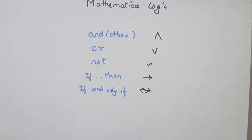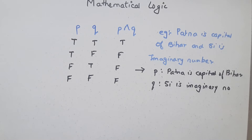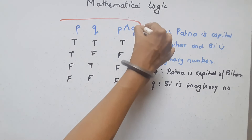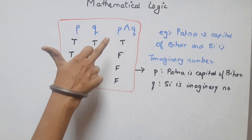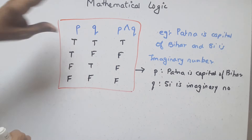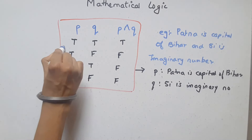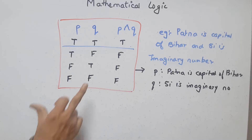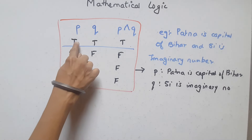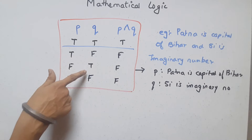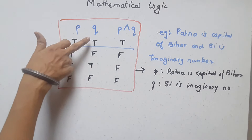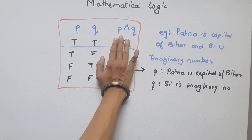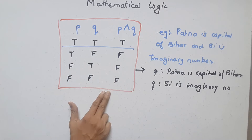Let me make the truth table for AND. The table shows all combinations of P and Q being TRUE or FALSE. To write it: first write TRUE TRUE, then FALSE FALSE for P, and alternating TRUE FALSE TRUE FALSE for Q. The result: only TRUE∧TRUE = TRUE; everything else is FALSE. So remember: only when both are TRUE, the result is TRUE.